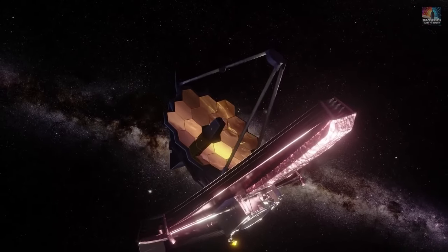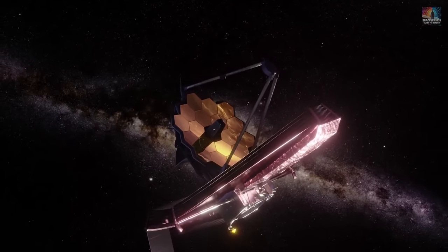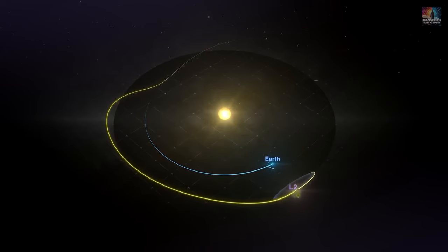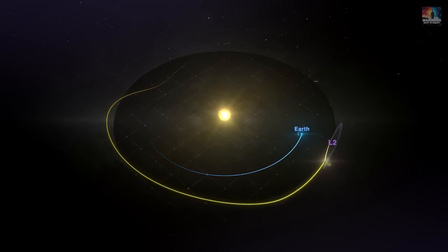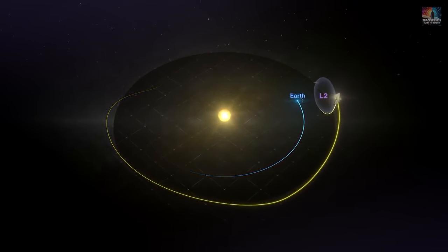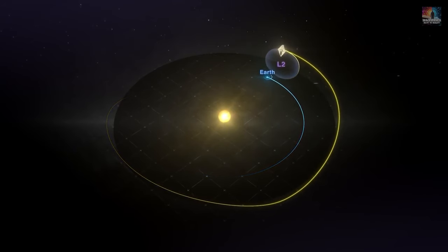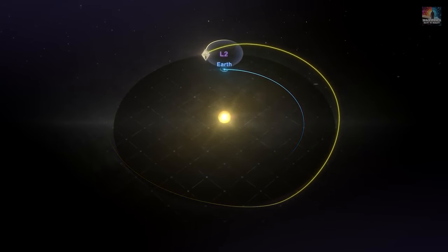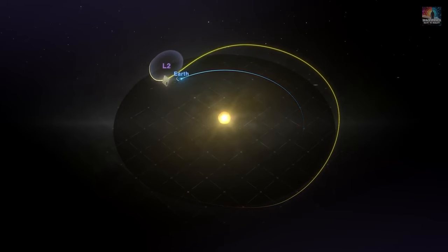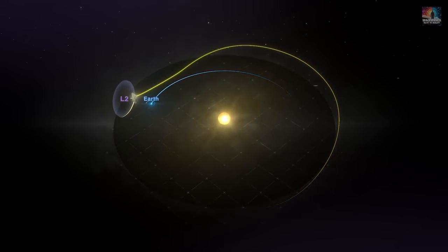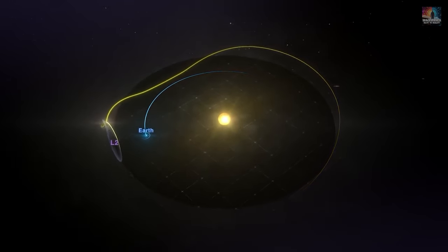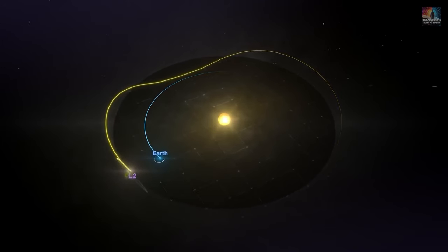The James Webb Space Telescope is a great example of how we use special points in space like the L2 Lagrange point to our advantage. It's positioned there in what we call a halo orbit. This smart setup helps the telescope stay pretty steady compared to the Earth and the Sun. This means it doesn't need a lot of fuel to keep its orbit in check, and it always gets enough sunlight for power, and can keep talking to us here on Earth without any interruptions.